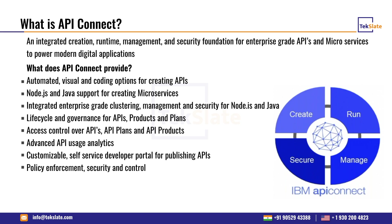As discussed, APIs designed inside IBM API Connect can be deployed either on the micro gateway or on the DataPower gateway, but terms and conditions apply. From version 2018 onwards, the micro gateway is deprecated — only the DataPower gateway remains as the runtime environment.